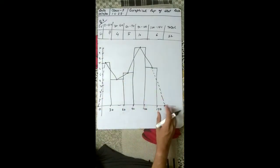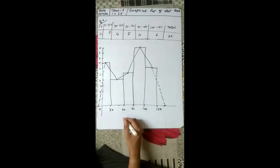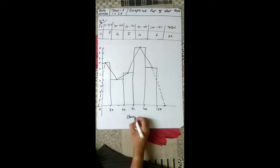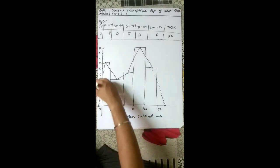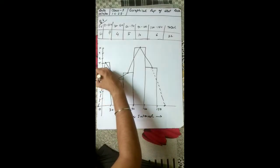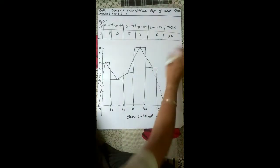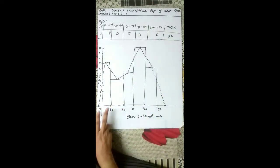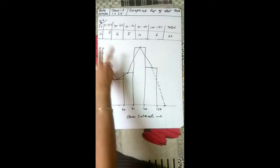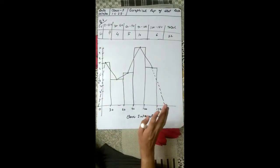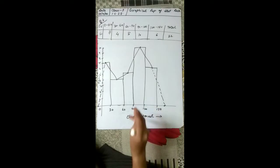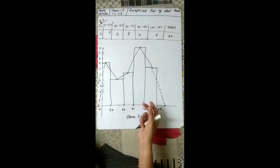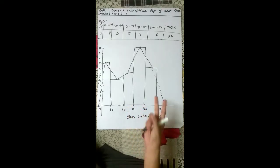This is called the frequency polygon. For question 6, label the x-axis as class intervals and the y-axis as frequency. Write the scale — for the x-axis, 1 unit is equal to 30 divisions, and for the y-axis, 1 unit is equal to 1 division. You must mention the scale in each and every graph. This is the 6th question — with the help of this, you can easily do the 4th and 5th questions.